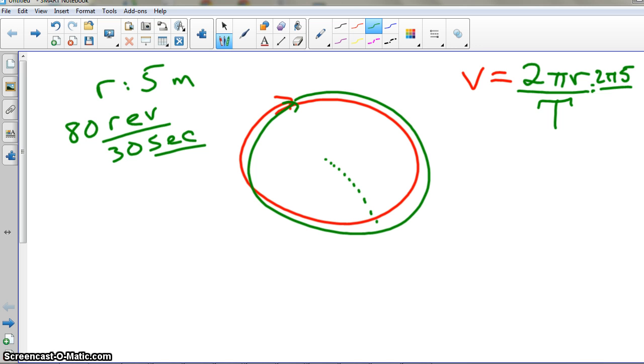What? Period. Period is what? How do you get that? Let's look at the unit. 80 divided by 30. So if you do 80 divided by 30, that's revolutions per second. Is that a period unit, revolutions per second, or cycles per second? Is that period, or is that frequency?